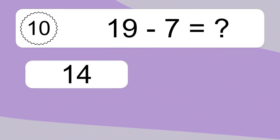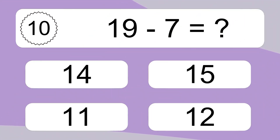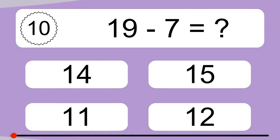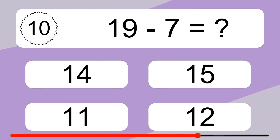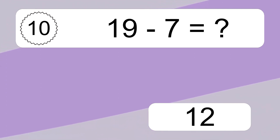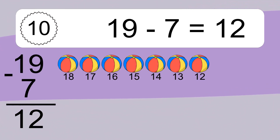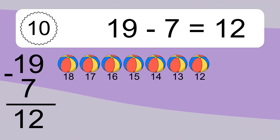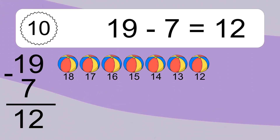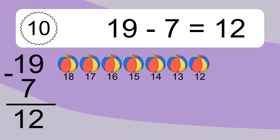19 minus 7 equals what? 19 minus 7 equals 12. Let's count it: 18, 17, 16, 15, 14, 13, 12.